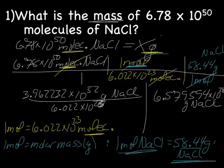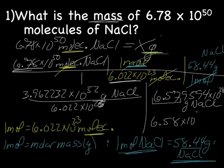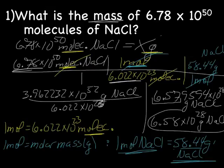When we go to look at sig figs, we have four sig figs and three sig figs, so we're going to keep three. We look at the nine, which is the first one we're going to drop. It's five or bigger, so our final answer is going to be 6.58 times 10 to the 28th grams NaCl.